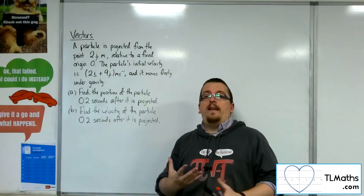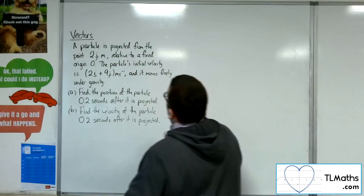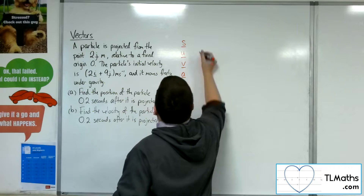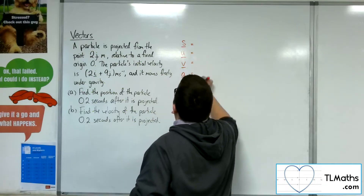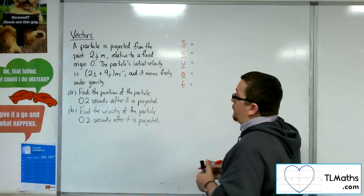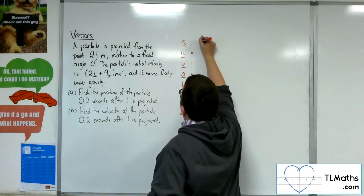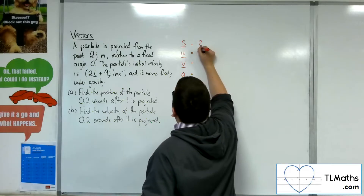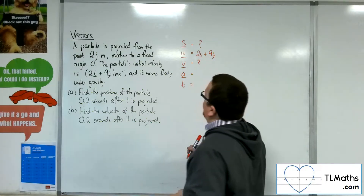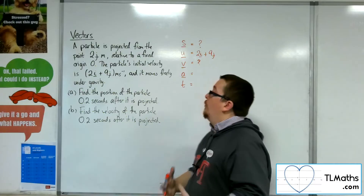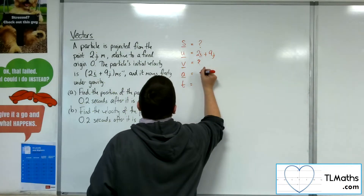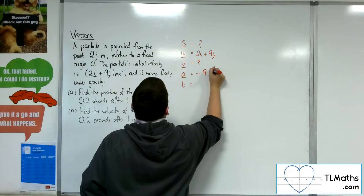So we're using 2D SUVAT here. We're going to write down S, U, V, A and T. Remember, S, U, V and A are all vectors, T is not. So S — we want to find the position, so we don't know that. The initial velocity U is 2i plus 9j. The final velocity V we don't know. The acceleration — it tells me the particle moves freely under gravity, so the acceleration will be minus 9.8j.